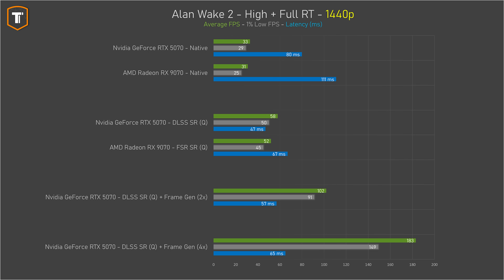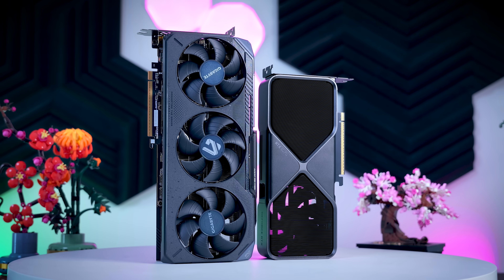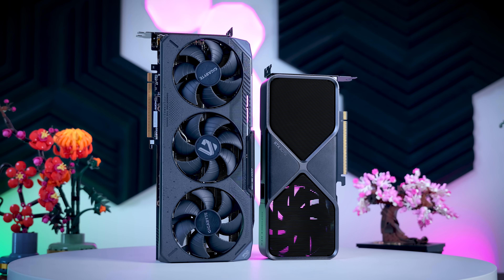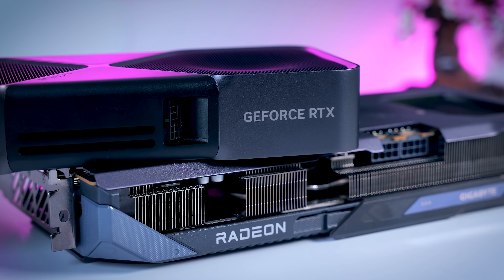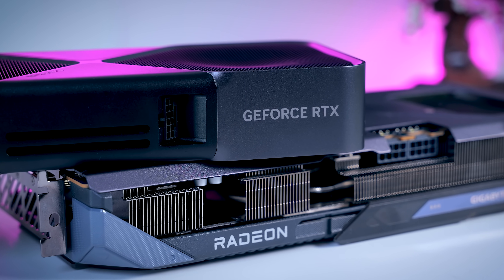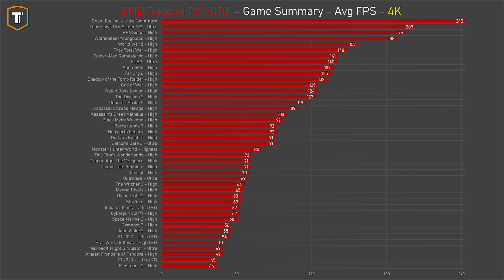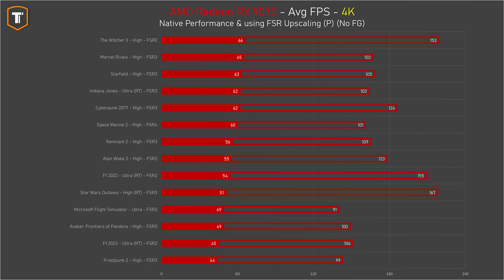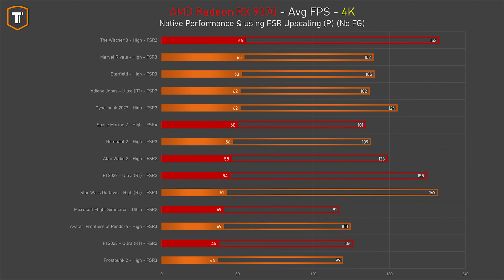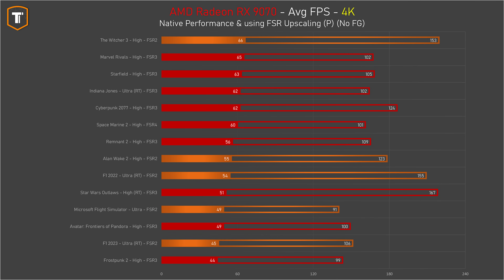Comparing upscaling technology, both AMD and NVIDIA have improved significantly this generation. AMD's FSR 4 looks very good and is a huge step up from FSR 3, and while it may not be quite as good as NVIDIA's DLSS today, the gap is smaller than ever. The downside for AMD is game support: of the 45 games tested, only Space Marine 2 supports FSR 4, with some using FSR 3 and others only FSR 2. Anything below FSR 4 simply isn't good enough compared to native rendering or to DLSS.